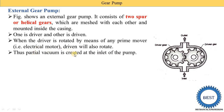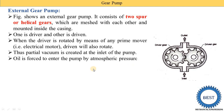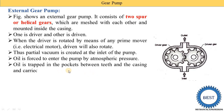When both gears start to rotate, a partial vacuum is created at the inlet of the pump. Oil is forced to enter the pump by atmospheric pressure, entering between the two gears. The oil is then trapped in the pocket between the teeth and the casing, and carried towards the outlet where its pressure increases and it is supplied to the outlet.